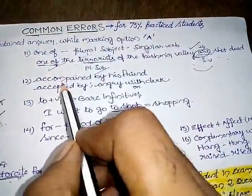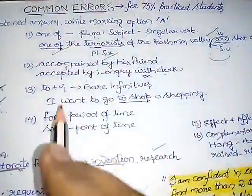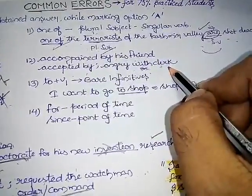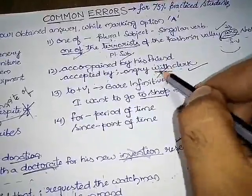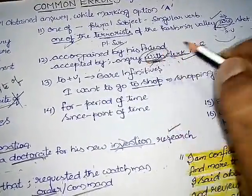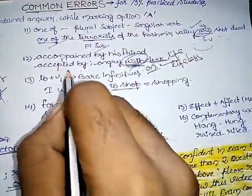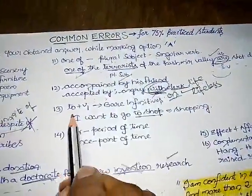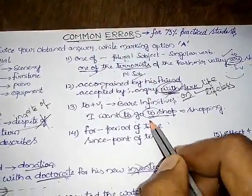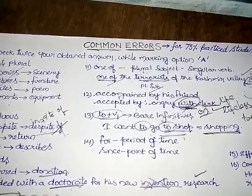Twelfth one is someone should be followed by this only. Accompanied by his friend, accepted by, angry with clerk. The statement is given I am angry on clerk. We generally use I am angry on clerk, it is right. But grammatically, it is wrong. It should be with clerk. Angry with clerk. Angry on somebody or something. If it is life, it should be with. If it is lifeless, that is non-living, it should be on. Two plus V1, that is bare infinitives. I want to go to shop. Here see, two to, double to. This is quite wrong. So it is replaced by shopping. That is, two plus V1 equals to shop equals to shopping.